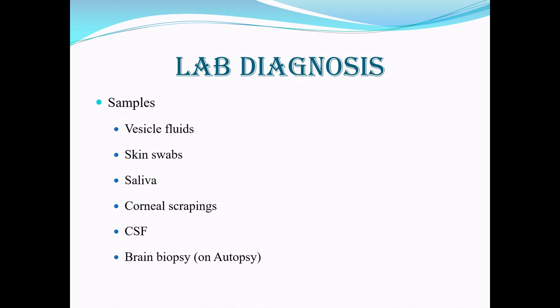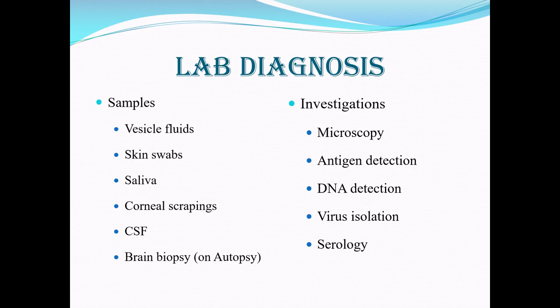For diagnosis, the samples you take include vesicle fluids, skin swabs, saliva, corneal scrapings, and CSF if there is neural involvement. If the patient dies, brain biopsy or autopsy can be done. With the samples, you can perform microscopy, antigen detection, DNA detection, virus isolation, and serology or antibody testing to look for the presence of viral infection.